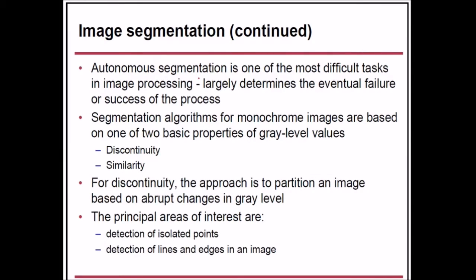Autonomous segmentation is one of the most difficult tasks in image processing and largely determines the eventual success or failure of the process. Segmentation algorithms for monochrome images are based on one of two basic properties of gray level values: discontinuity and similarity.